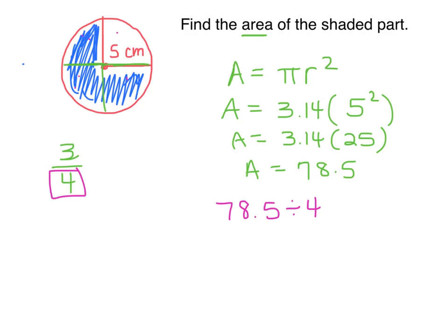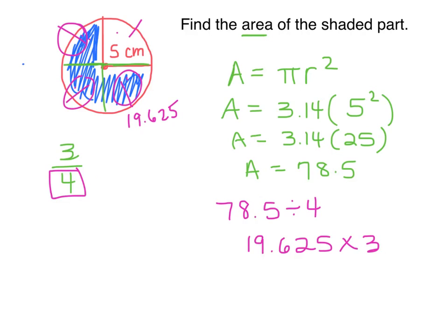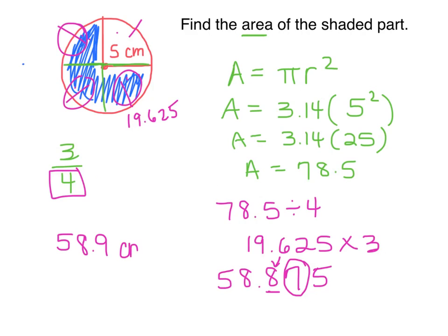So 78.5 divided by 4 gives me 19.625 — that means each section is 19.625. We want only the three shaded parts, so multiply by three. 19.625 times 3 equals 58.875. Rounding to the nearest tenth, I look at the number after the 8 — it's a 7, which is higher than 5, so I round up. My final answer is 58.9 centimeters squared — that's the area of just the shaded part.